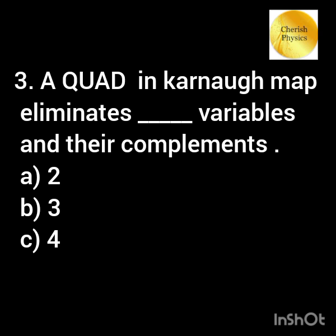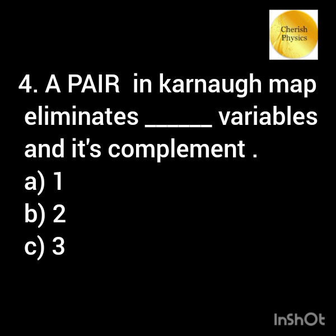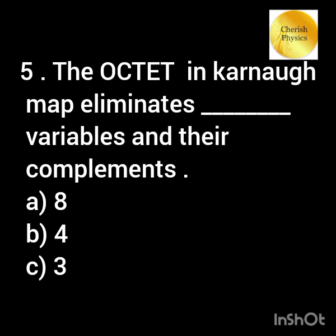A quad in a Karnaugh map eliminates a certain number of variables and their complements. A pair in a Karnaugh map eliminates a certain number of variables and its complement. The octet in a Karnaugh map eliminates a certain number of variables and their complements.